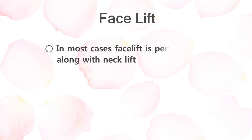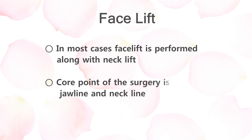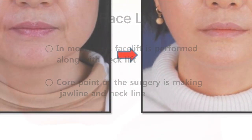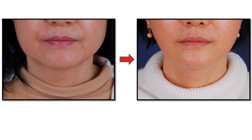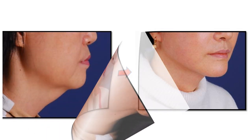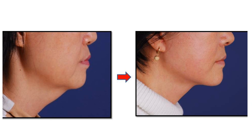Facelift is generally performed along with neck lift. Rather than just lifting the face, lifting the neck at the same time is more effective. The most central procedure of facelift is making the jawline and neckline. This photo shows a greatly improved jawline after surgery. The profile view shows just how well the jawline improved and how the turkey gobbler neck has been lifted up. Correction of jawline and neckline is most important in neck lift.